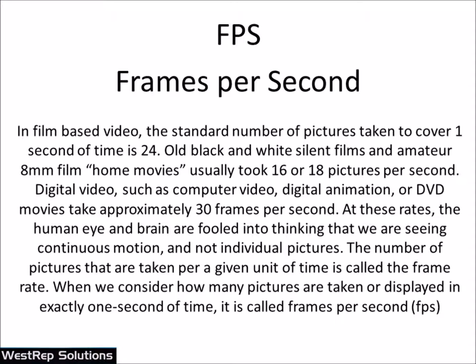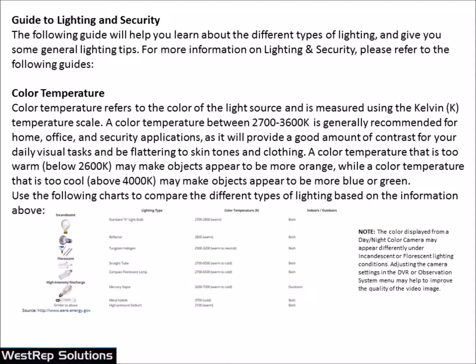Frames per second is the amount of frames shown in one second. Looking back at older films, one second is 24 frames. Old black and white films or home movies were 16 to 18 frames per second, and DVDs are about 30 frames per second. Sometimes we don't want to record at 30 fps — 15 frames per second in an HD or high-resolution image is often more than enough unless you have a lot of movement.